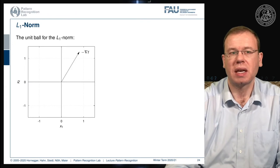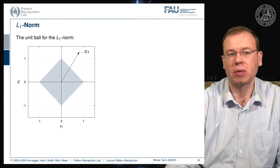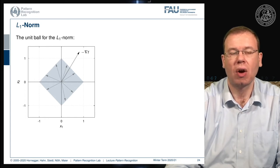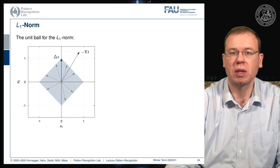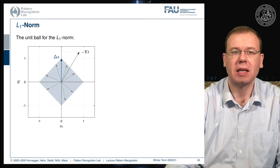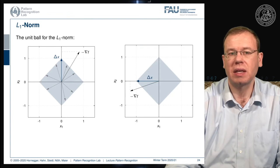Now let's consider the L1 norm, which has a different unit ball — a diamond shape. We vary u over all boundaries of the unit ball and look for the direction that produces the maximum projection of the negative gradient. We find it lies along one of the coordinate axes. In a second example with a different negative gradient direction, we again end up with a projection onto exactly one coordinate axis.